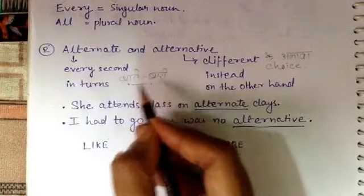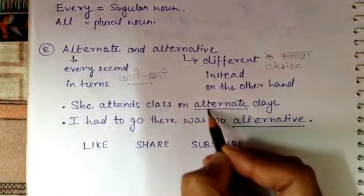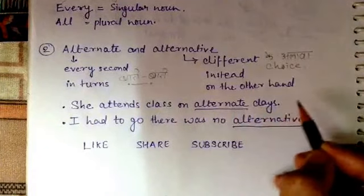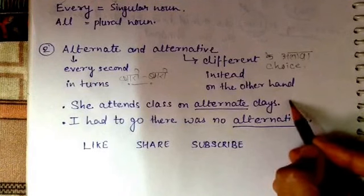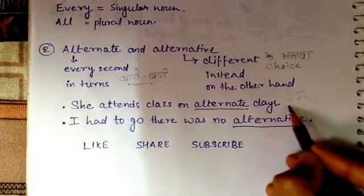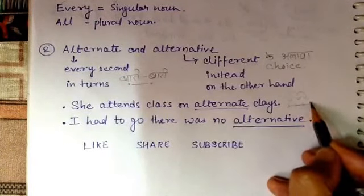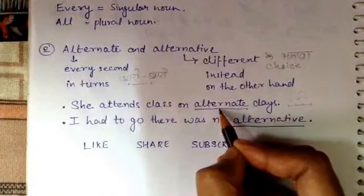This is an example: she attends class on alternate days. This means she attends class on alternate days - one day yes, then the next day no, then the next day yes. She has a gap in this way. She attends class on alternate days.